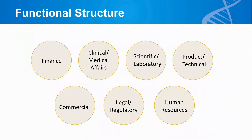Once you get beyond the executive team and the board, companies can be organized in a variety of different ways. Some companies are structured functionally, meaning there are teams of people that have related skills or functions — a finance team, a scientific team, a commercial team. There are tiers of leadership within each of these functional teams, and the reporting structure is usually up to someone within your own team in this type of structure.